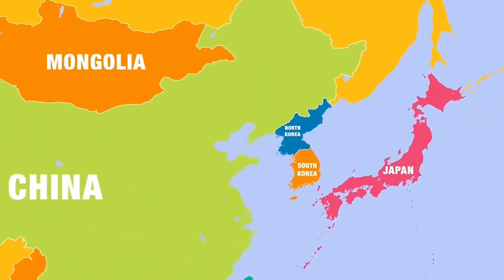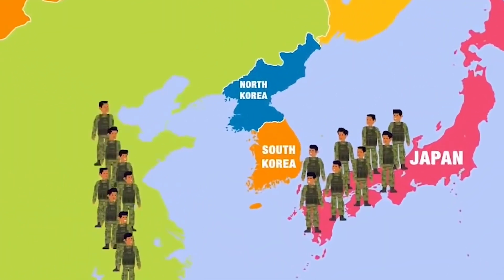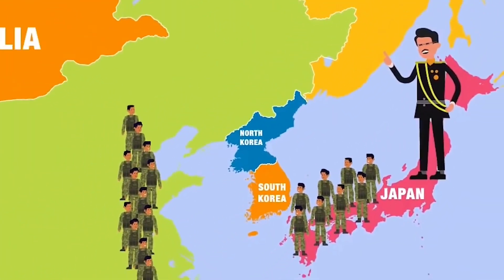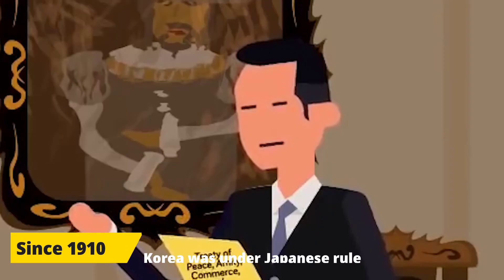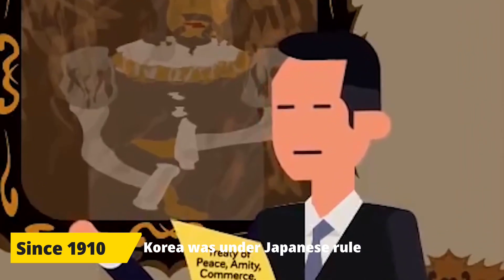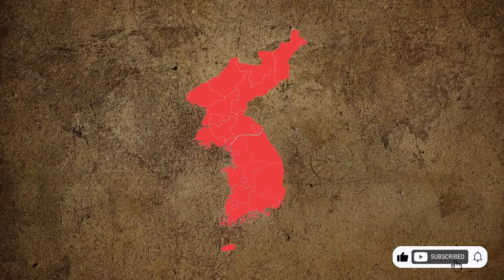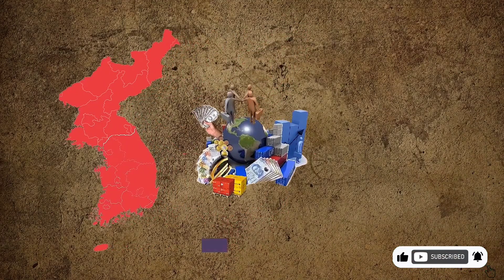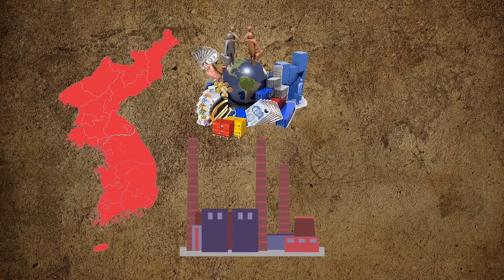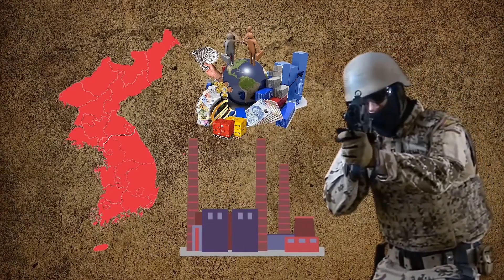Before 1945, Korea had been under Japanese colonial rule since 1910. The Japanese, under the authority of Emperor Meiji, sought to extend their influence and control over the Korean peninsula as part of their imperialistic ambitions in East Asia. Motivated by Korea's rich natural resources and strategic geographical location, Japan established control over the nation.